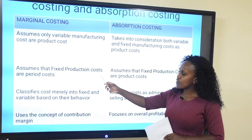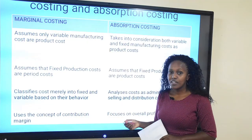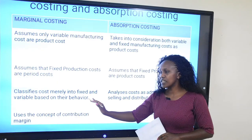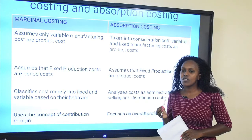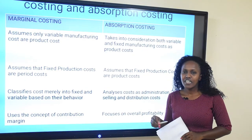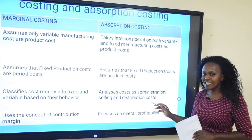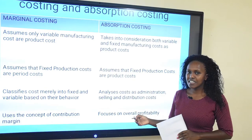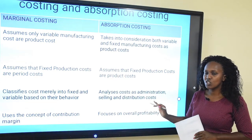The third difference is that marginal costing classifies cost into only two categories: either fixed or variable — based on cost behaviour. Absorption costing goes further to analyze costs into their usage in terms of whether they are administration costs, selling costs, distribution costs, etc. It aligns with the normal classification of expenses into selling, distribution, and administration expenses.